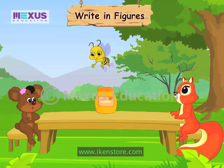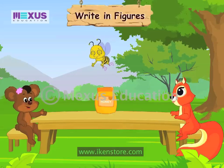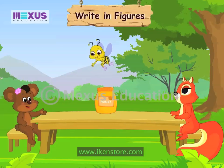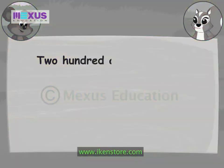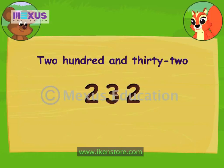We saw how to write numbers in words. Now let us see how to identify the number given in words. Let's see the first number. It's 232. 200 means the digit in the hundreds place is 2. The digits in the tens and ones place are read together, that is 32. So the number is written as this.